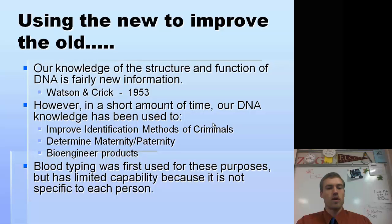The old way that they used to do a lot of these things, specifically determining parents and identification of criminals, was via blood typing, and we'll learn more about blood typing in our genetics unit, but DNA fingerprinting or gel electrophoresis is a much better technique to use.